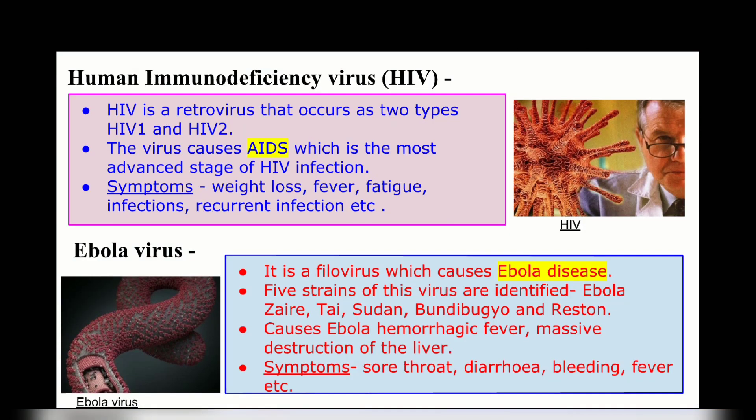The next one is the HIV virus. This virus attacks cells that help the body fight infection, making a person more vulnerable to other infections and diseases. Untreated HIV leads to AIDS, which has no effective cure. The Ebola virus causes Ebola disease — a rare but deadly disease found in people and non-human primates. The virus was first reported in 1976.